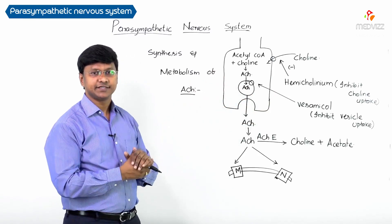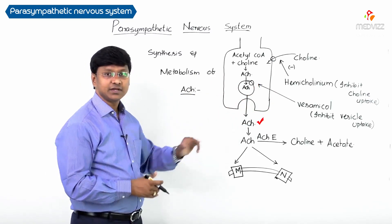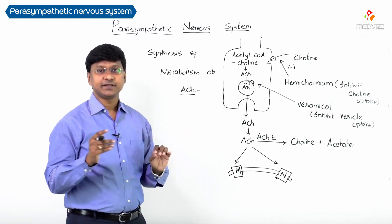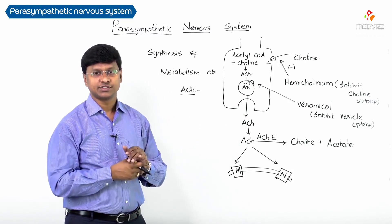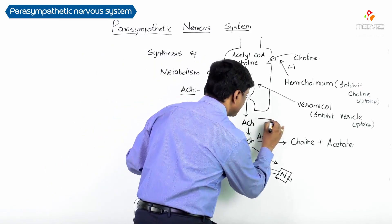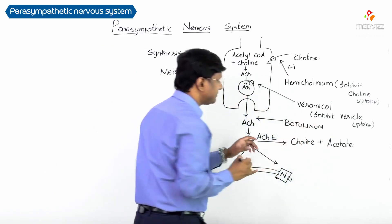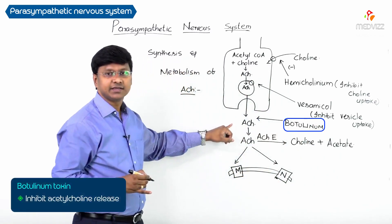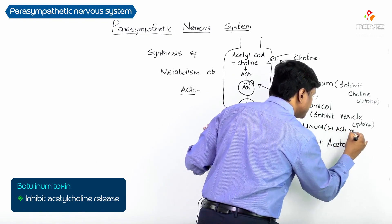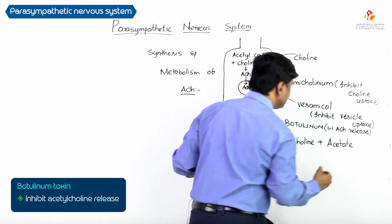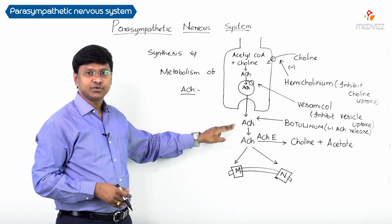The acetylcholine stored in vesicles must be released from the cholinergic neuron upon stimulation. This release can be inhibited by a toxin called botulinum toxin. Botulinum toxin inhibits the release of acetylcholine from the cholinergic neuron.